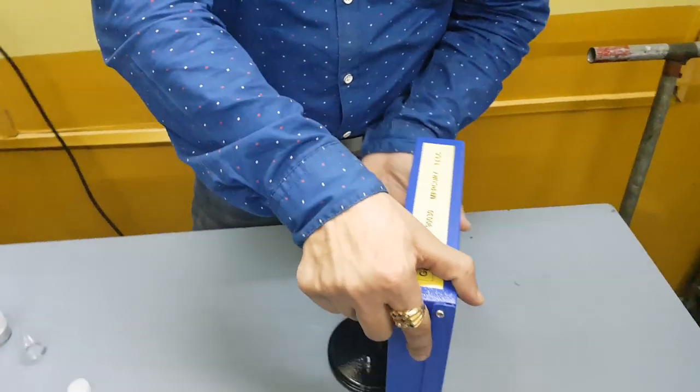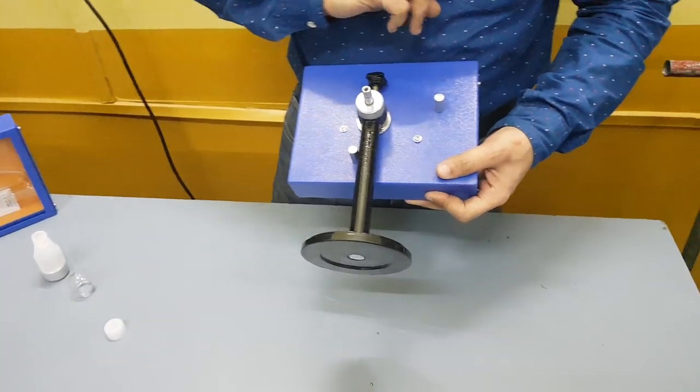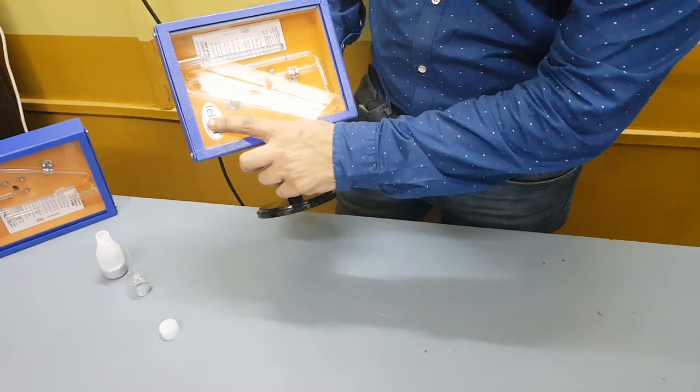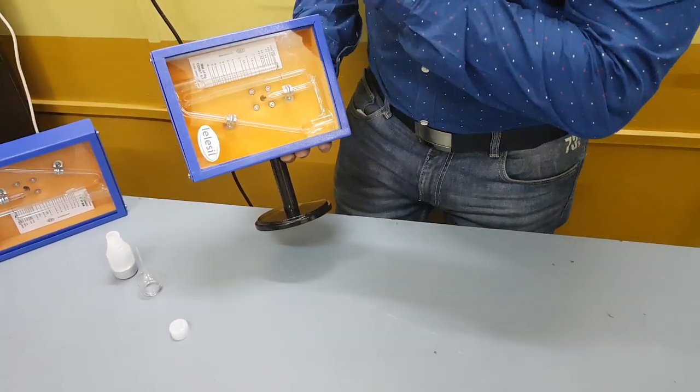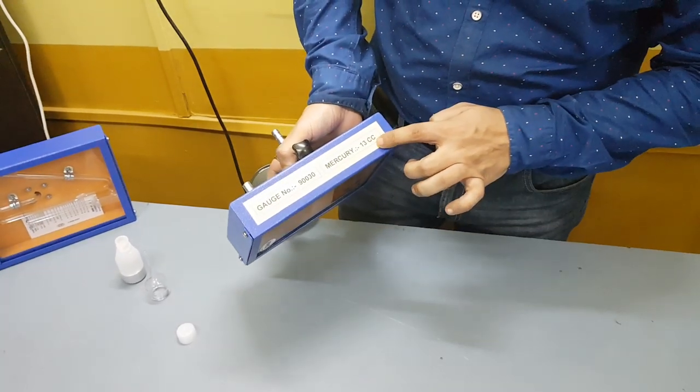Now to start with, there are two locking bolts provided at the back and a locking nut. When you have to fill mercury, you have to ensure that you are parallel to the logo, the scale is at the top. Gradually tilt it in such a way that the gauge number is seen at the top.